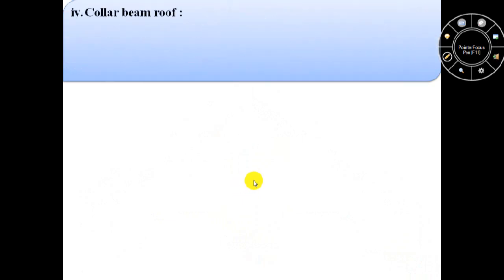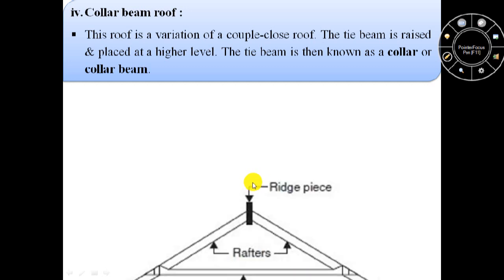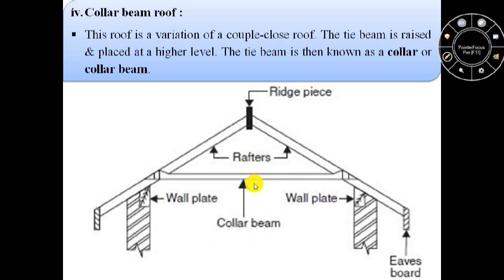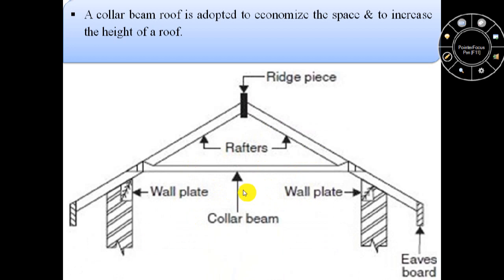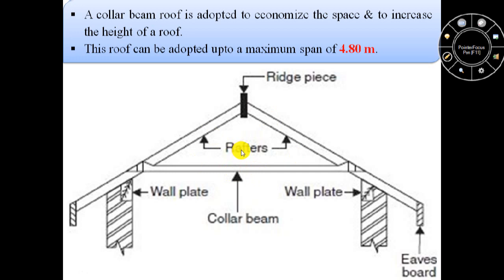The fourth form of single roof is collar beam roof. This collar beam roof is a variation of a couple close roof where the tie beam is raised and placed at a higher level, and this tie beam is known as a collar or collar beam. This collar beam roof is adopted to economize the space and to increase the height of a roof. This roof can be adopted up to a maximum span of 4.80 meters.